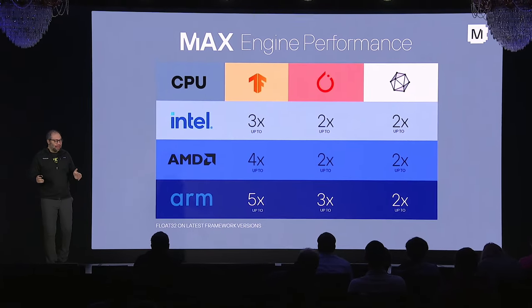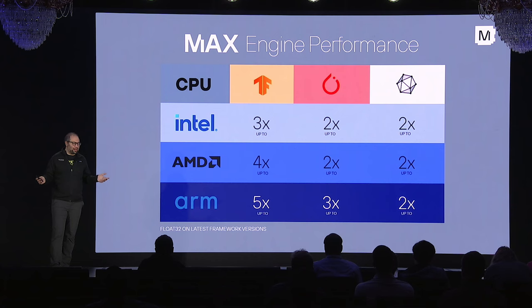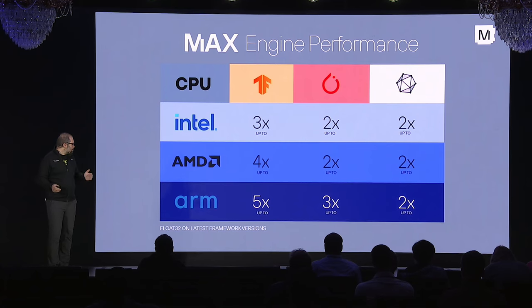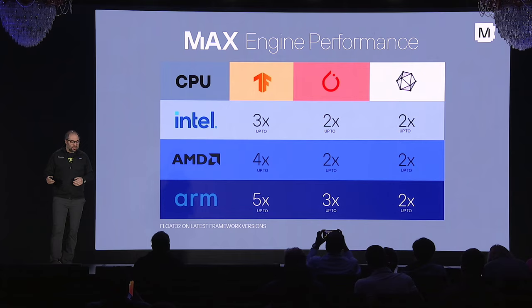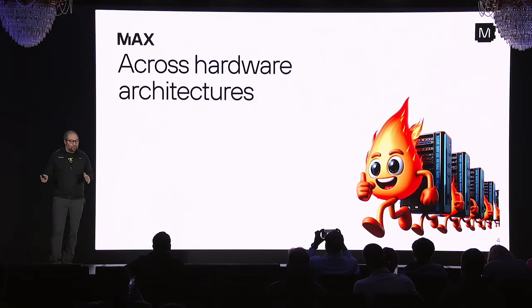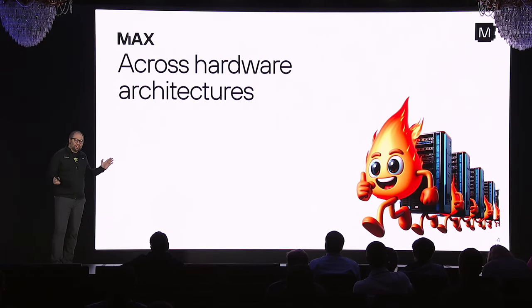Max gives you huge compute multipliers — 2x to 5x in many cases — and that works across hardware architectures. As the figure showed, Arm, Intel, and AMD are all represented there. And it works from large models to small models. Let's dig into that for a little bit.